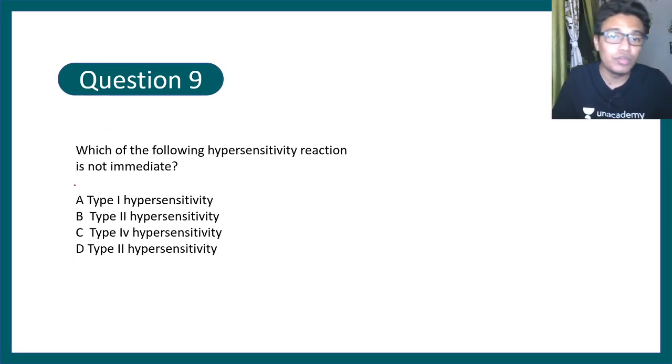Question number 9: which of the following hypersensitivity reaction is not immediate? That means the manifestation of this reaction does not happen immediately. Type 1, type 2, type 3, or type 4 hypersensitivity. The correct option is type 4 hypersensitivity, which is also known as delayed hypersensitivity response or DTH. Question 9, you got the answer.